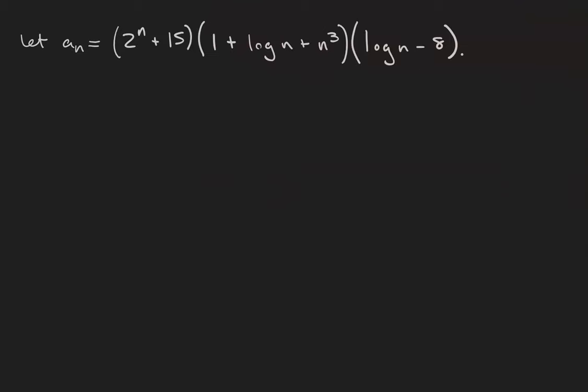Here's another example this time with a product. Let an be the sequence of 2 to the n plus 15 times 1 plus log n plus n cubed plus log n minus 8. The multiplication rule says that growth rates are multiplicative, so we want to find the highest order term from each one of the factors.